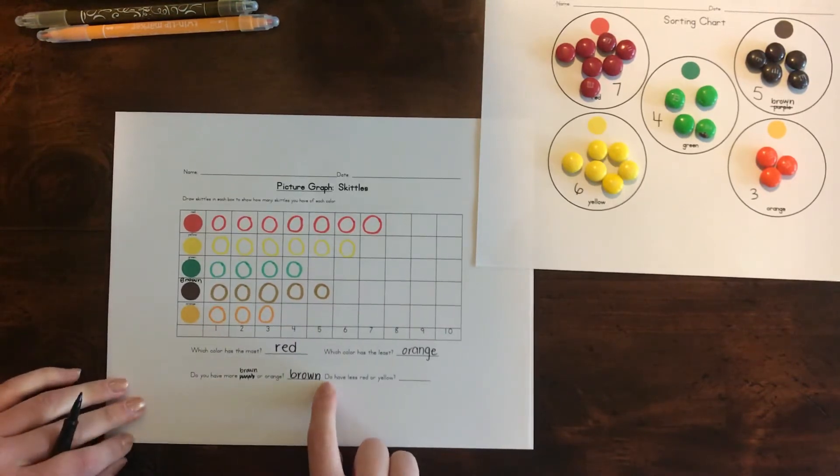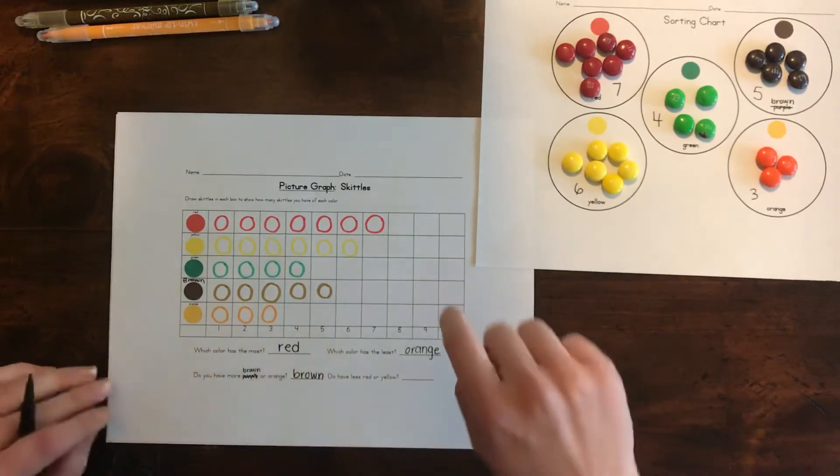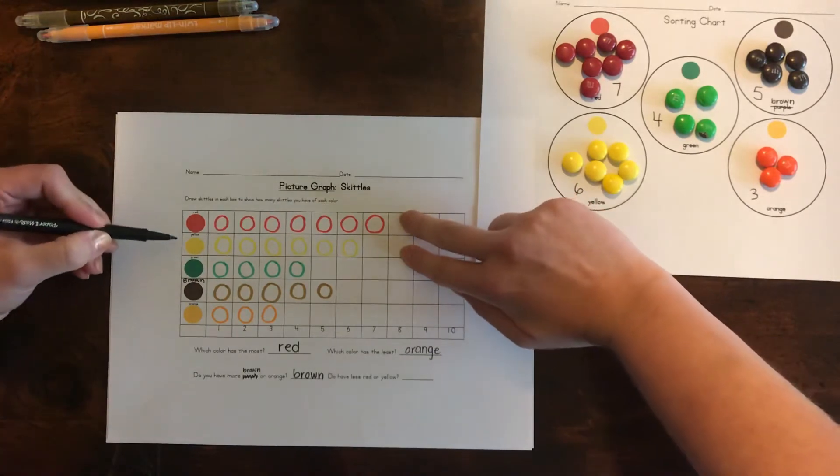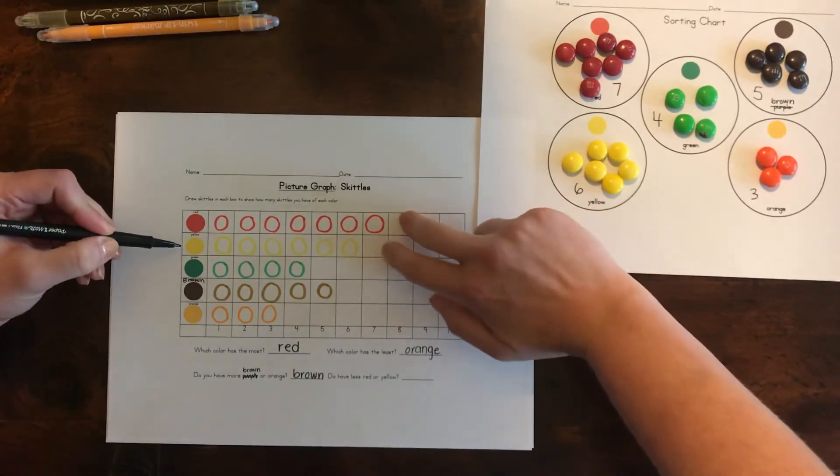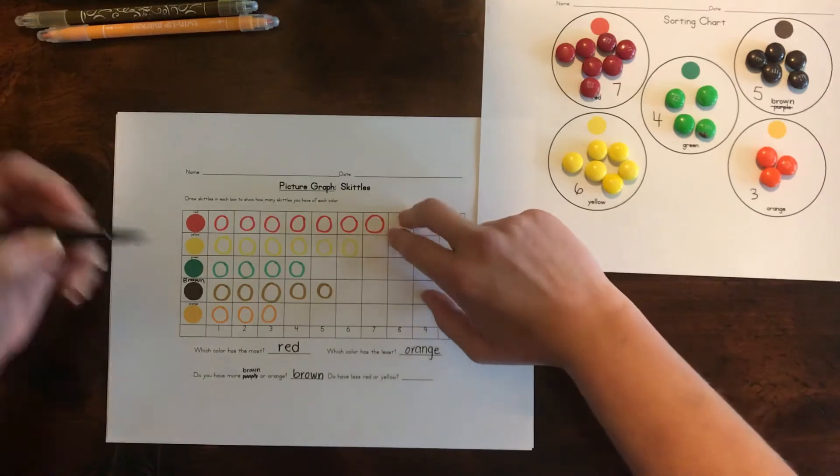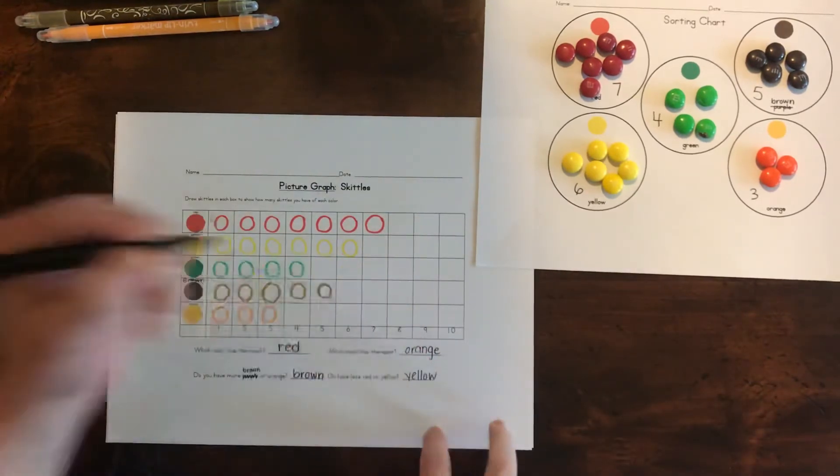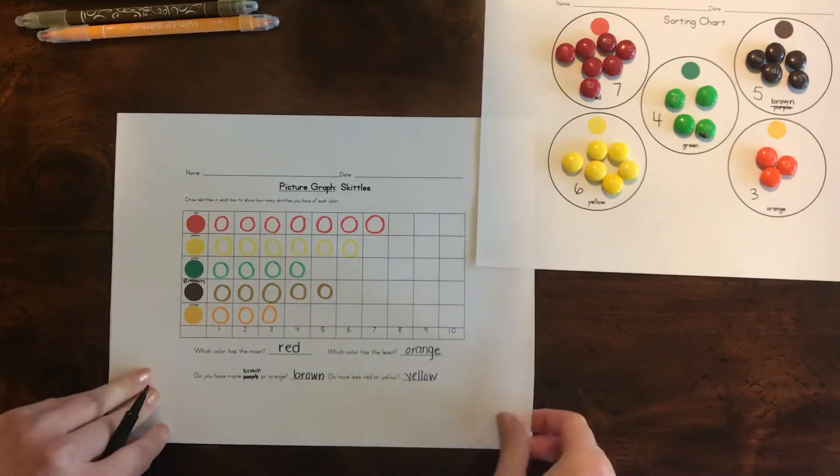All right. Let's look at this. Do you have less red or yellow? So let's look at red and yellow. Do we have less red or yellow? I can see that we have one more red. So we have less yellow. Nice job. We're going to move to the next graph.